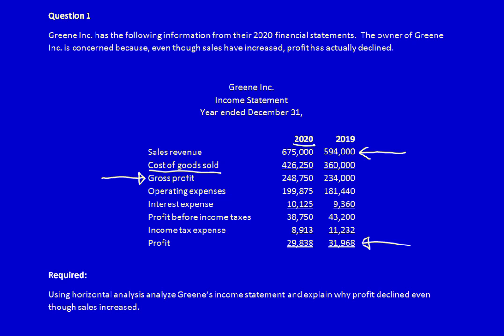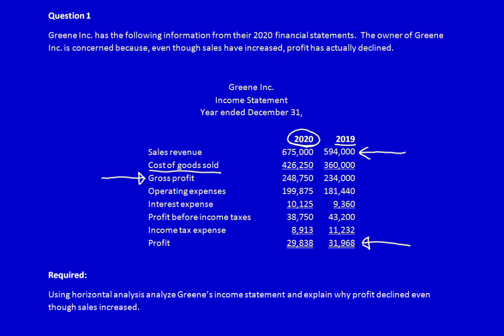As required for horizontal analysis, we have the last two years: 2020 and 2019. We need comparative financial statements in order to do horizontal analysis. When you look at comparative statements, the year closest to the account names is always the most recent year, because stakeholders always want to see the most current information first.